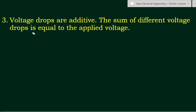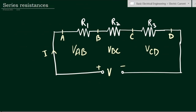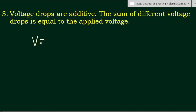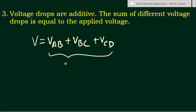The third characteristic is that voltage drops are additive. The sum of the individual voltage drops equals the applied voltage. The voltage drops Vab, Vbc, and Vcd — across R1, R2, and R3 respectively — can be added together, and their sum equals the applied voltage V. So we write: V = Vab + Vbc + Vcd.